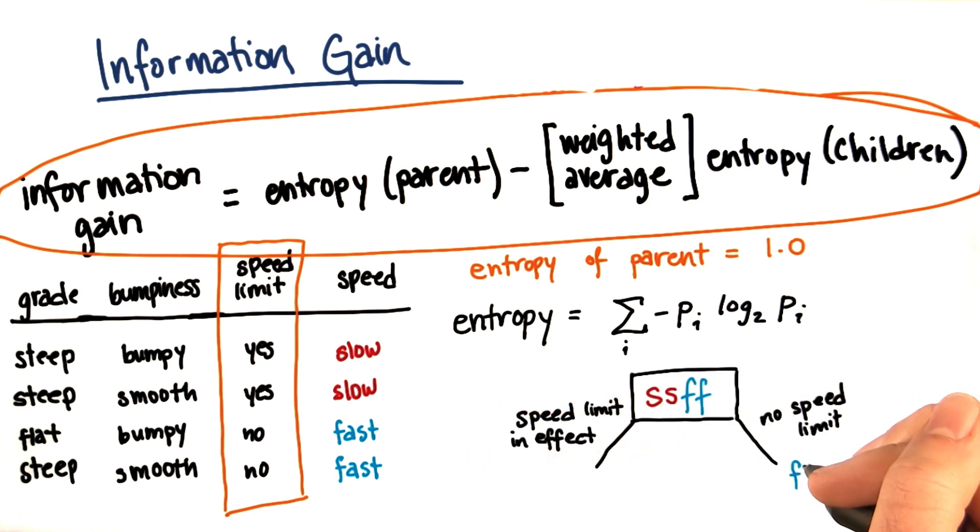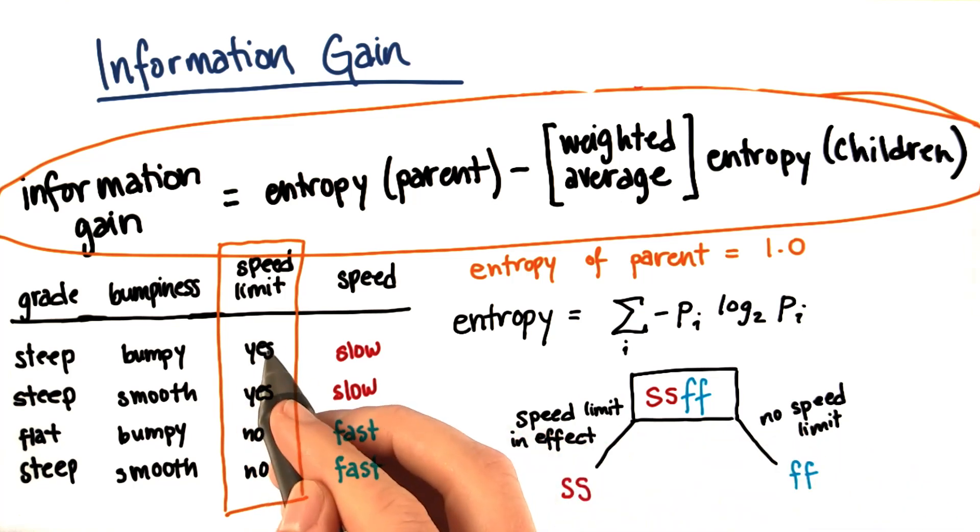And just to sketch out the decision tree, it would look something like this. Where when we look at samples where the speed limit is in effect, so these first two rows where the answer for speed limit is yes, then we get all of our slow examples over there.